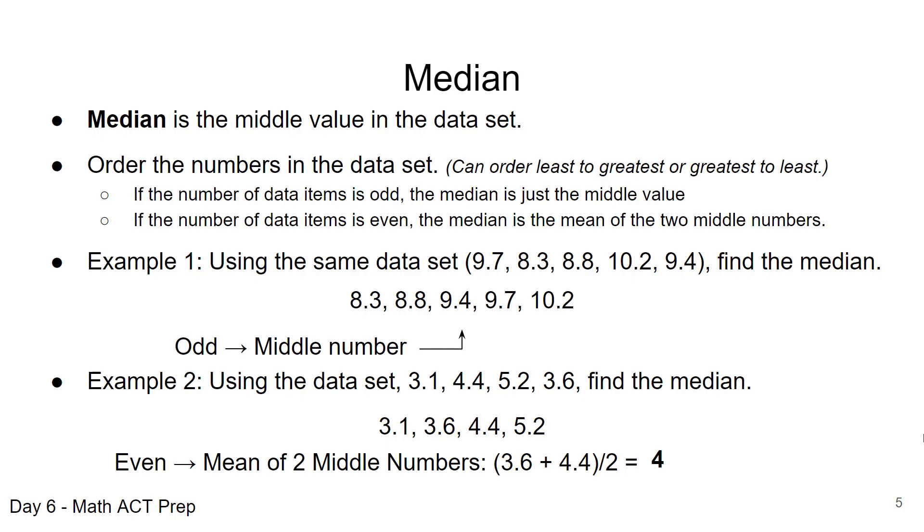If you'll notice from example one and example two, in example one, when you have an odd number of values, your median is always going to be a value in your data set. When you have an even number of values in your data set, it may or may not turn out that the median is the same as a value in your data set. It depends on that average of the middle two numbers. That's something to consider when we look at logic-based questions, having a general knowledge of not only how to calculate the median, but make inferences and draw conclusions from values of data sets.